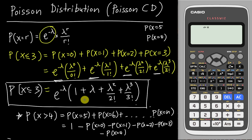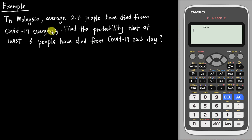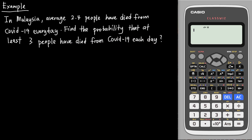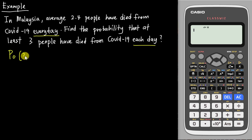Now let's go to an example I prepared so you can understand better. I made up this example myself, so it's not a real value. Let's say in Malaysia we have an average of 2.4 people who have died from COVID-19 every day. Find the probability that at least three people have died from COVID-19 each day. For this kind of topic, first make sure they have the same time value — here it says every day, and there it says each day, so that's the same. I'll write down my Poisson mean value, which is lambda equals 2.4.